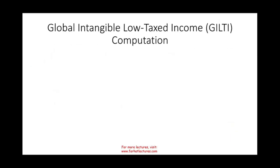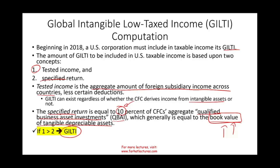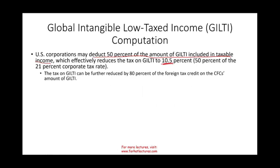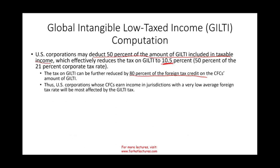If your tested income is greater than the specified return — greater than 10% of your fixed asset book value — then you have GILTI. The excess is assumed to be coming from intangible assets. You can then deduct up to 50% of the GILTI amount included in taxable income, making your effective tax rate on that income 10.5%. The tax on GILTI can be further reduced by 80% of the foreign tax credit, so if you pay taxes overseas, 80% of that credit reduces your U.S. GILTI tax. Corporations in low-tax jurisdictions will be most affected, as they have little or no foreign tax credit to offset.